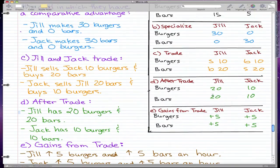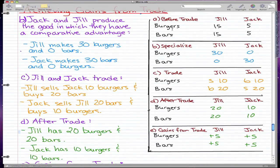Let's have a once-over. Before the trade, Jill was making 15 and 15, Jack was making 5 and 5. After the trade, Joe was making 20 and 20, Jack 10 and 10. So both Joe and Jack increased their production by 5 by trading.